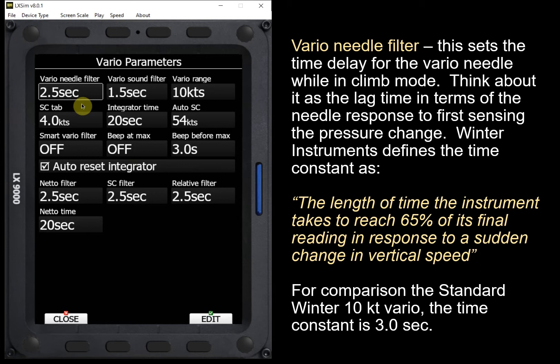For comparison, a standard Winter 10-knot Vario has a time constant of three seconds. Depending on what we're accustomed to and what we have in the plane, if we also have a Winter Vario, we might want to set this to three seconds so it matches. Or we may wish to set it a little bit faster to get a faster response from our electric Vario.